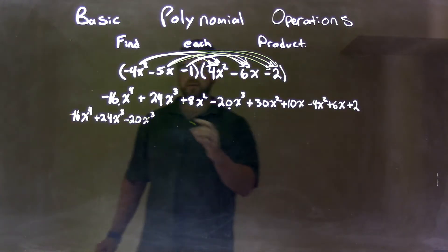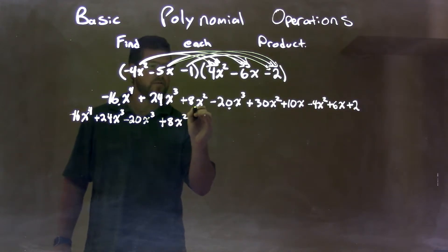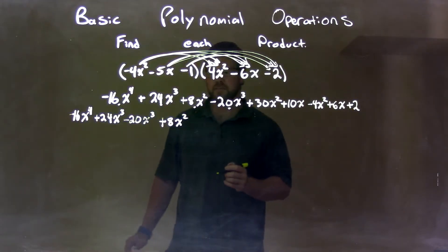Now we have our x squared. We have 8x squared. This marker is dying here, but I think you can still see it.